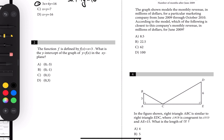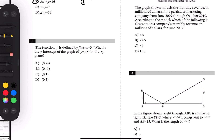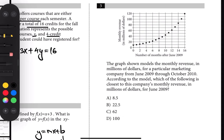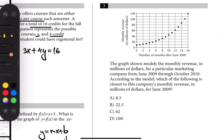The second one — we're looking for the y-intercept of the linear function, and that's given in slope-intercept form like y equals mx plus b. B represents the y-intercept, so that's 3. Zero, three. D.